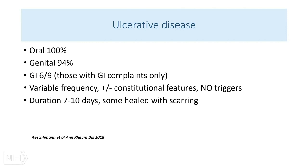In terms of ulcerative disease, all patients had oral ulcers, and 94% had genital ulcers. Of the nine patients with gastrointestinal complaints, two-thirds had GI ulcers anywhere along the GI tract on endoscopy. The ulcers came and went, usually lasting about 7 to 10 days. They were not always, though sometimes, associated with constitutional features, and sometimes the lesions healed with scarring.